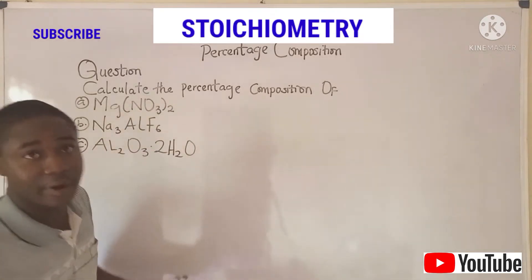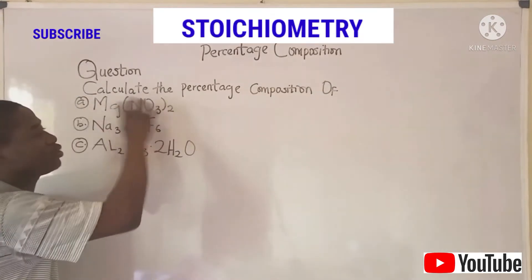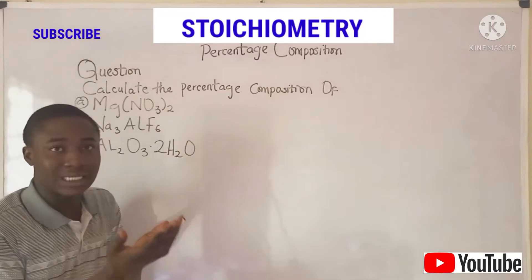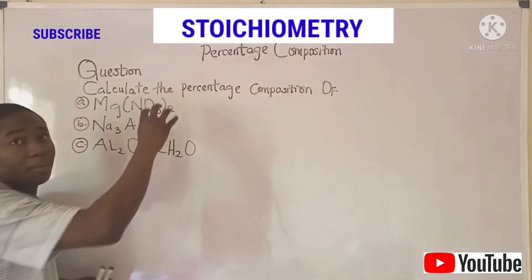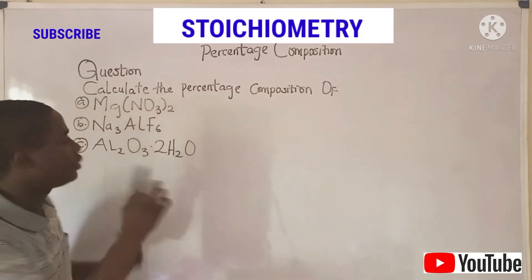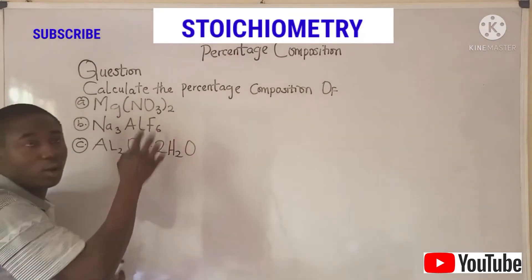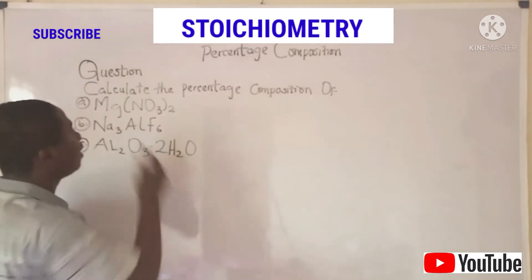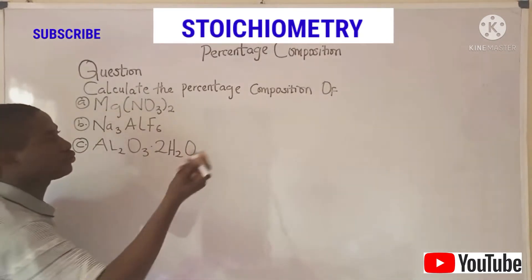To do that is very easy. First, you need to get the overall molar mass or the formula weight of the compound. We determine the formula weight of the compound. So, let's quickly do that for magnesium nitrate.